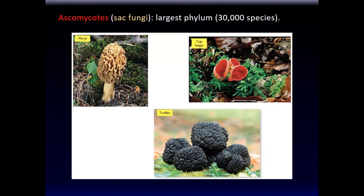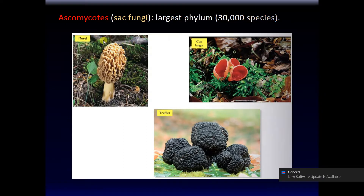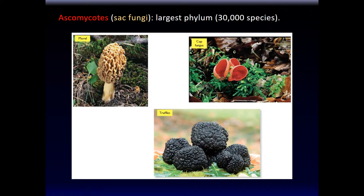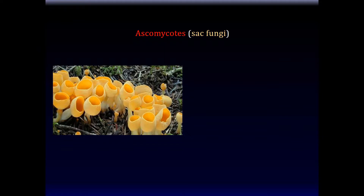The Ascomycota are known also popularly as sac fungi. Many of them look like sac-like things, like cup-like things, but that's not where they get the name sac. They're commonly referred to as sac fungi. Some of these are edible and apparently quite expensive, like the morels and the truffles. The Ascomycota is apparently the largest of the phylum — some 30,000 species.